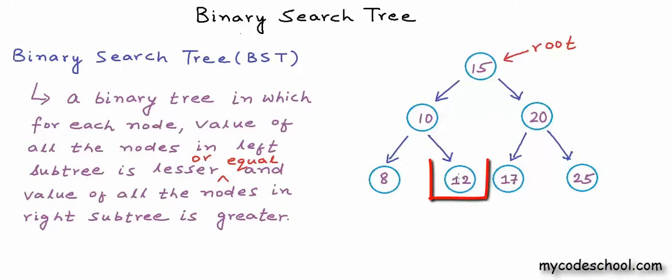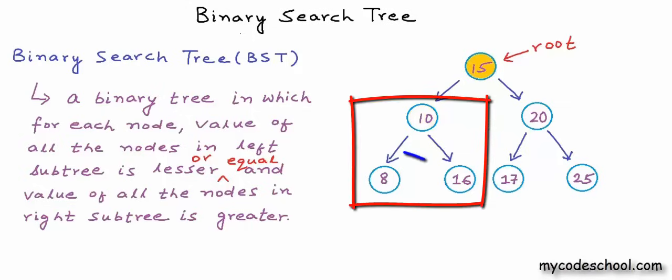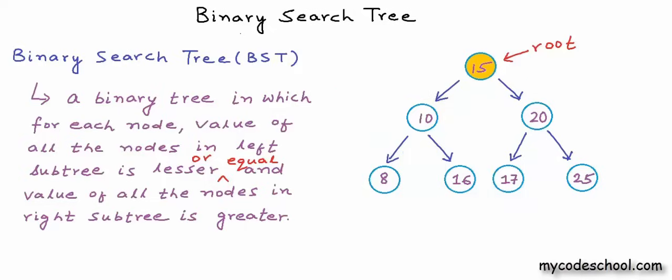What if I change the value 12 to 16? For node with value 10, the node with value 16 in its right is fine. But for the root node with value 15, we now have a node in the left subtree with a higher value of 16. So this tree is no longer a binary search tree. I'll revert the value back to 12.